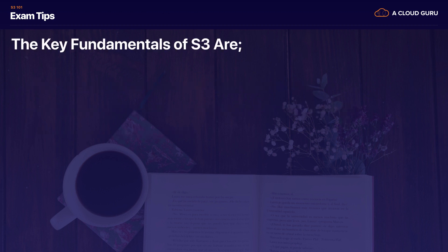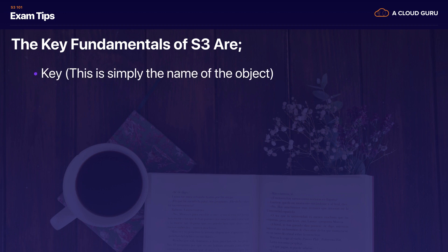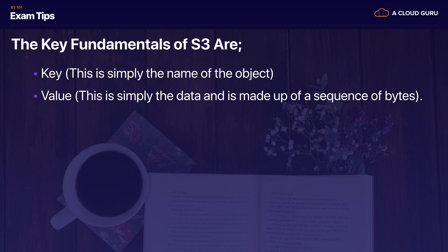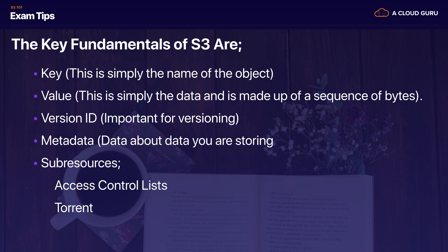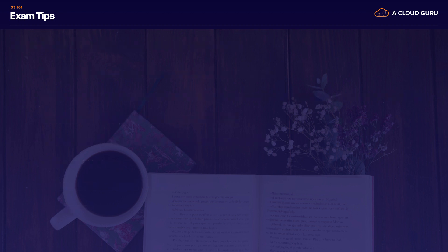Remember the key fundamentals of an S3 object: the key (the name of the object), the value (the data, made up of a sequence of bytes), the version ID (important for versioning), metadata (data about the data you're storing), and sub-resources including access control lists and torrents. The access control list defines permissions on that object, and you can lock objects down individually at both the bucket level and the object level.